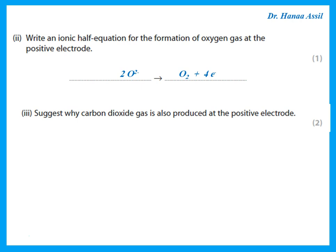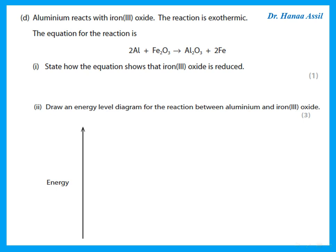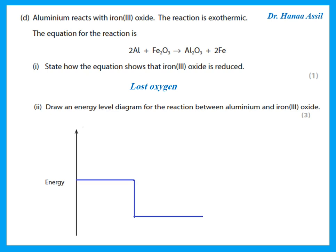Carbon dioxide is also produced at the positive electrode because the electrodes are made of carbon. Oxygen gas formed at the electrode reacts with the carbon electrode to form carbon dioxide — that is why the anode needs to be replaced from time to time. In the thermite reaction, aluminium reacts with iron(III) oxide, which is exothermic. Iron(III) oxide is reduced because it loses oxygen to form iron. The energy level diagram shows reactants at higher energy than products, with the difference being ΔH.